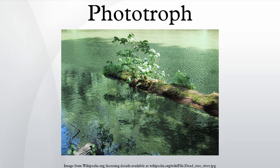Oxygenic photosynthetic organisms use chlorophyll for light energy capture and oxidize water, splitting it into molecular oxygen. In contrast, anoxygenic photosynthetic bacteria have a substance called bacteriochlorophyll, which absorbs predominantly at non-optical wavelengths for light energy capture, live in aquatic environments, and using light, oxidize chemical substances such as hydrogen sulfide rather than water.